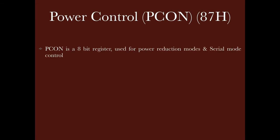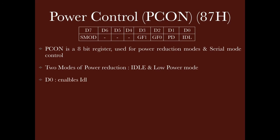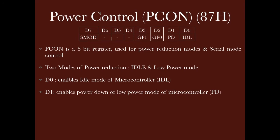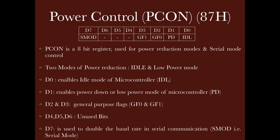Then we have the power control register PCON at 87H. This is an 8-bit register used for power reduction modes and serial modes. The D0 bit is idle mode, D1 bit is power-down mode, D2 and D3 bits are general-purpose flags used in power reduction mode, D4 through D6 are unused, and the D7 bit is used in serial mode.